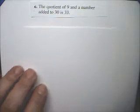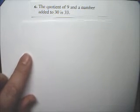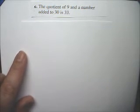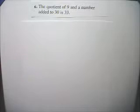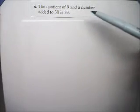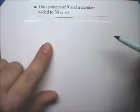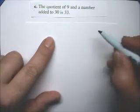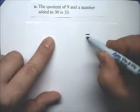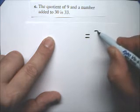The quotient of 9 and a number added to 30 is 33. Well, again, you have to look at what you have here. Start any place. You can start at the back. We're going to have something is 33.